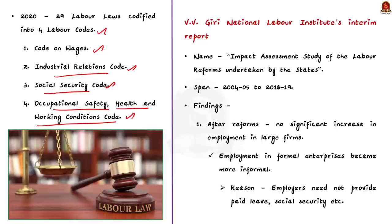Now let us see about the report by the V.V. Giri National Labor Institute. The report is named as Impact Assessment Study of Labor Reforms Undertaken by the States. This report provides insights into the impacts of reforms so far. The report spans the period 2004-05 to 2018-19 and it focuses on 6 states which have implemented the reforms: Rajasthan, Maharashtra, Andhra Pradesh, Tamil Nadu, Jharkhand and Uttar Pradesh.